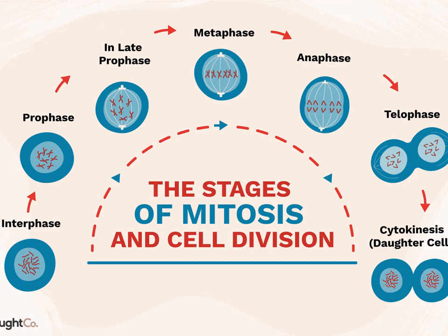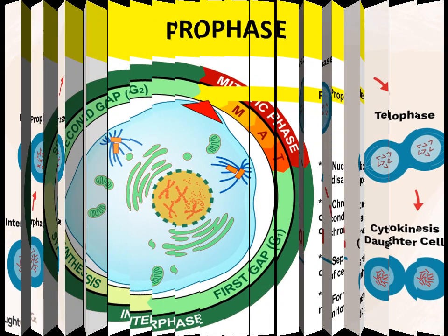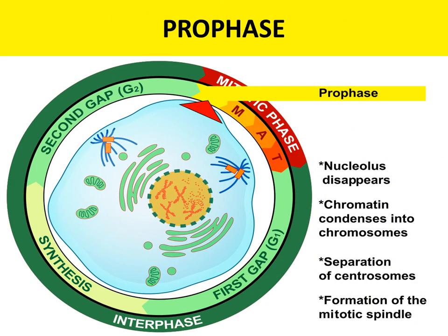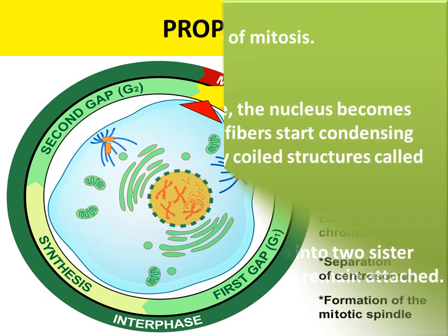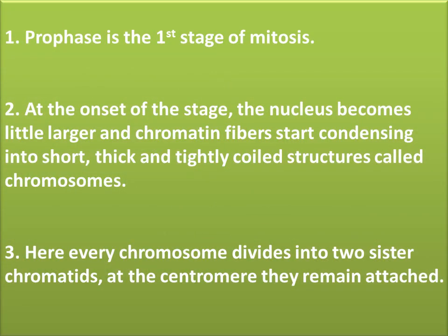There are five stages in mitotic cell division. The first one is prophase. Prophase is the first stage of mitosis. At the onset of this stage, the nucleus becomes slightly larger and chromatin fibers start condensing into short, thick, and tightly coiled structures called chromosomes. Every chromosome divides into two sister chromatids, which remain attached at the centromere.